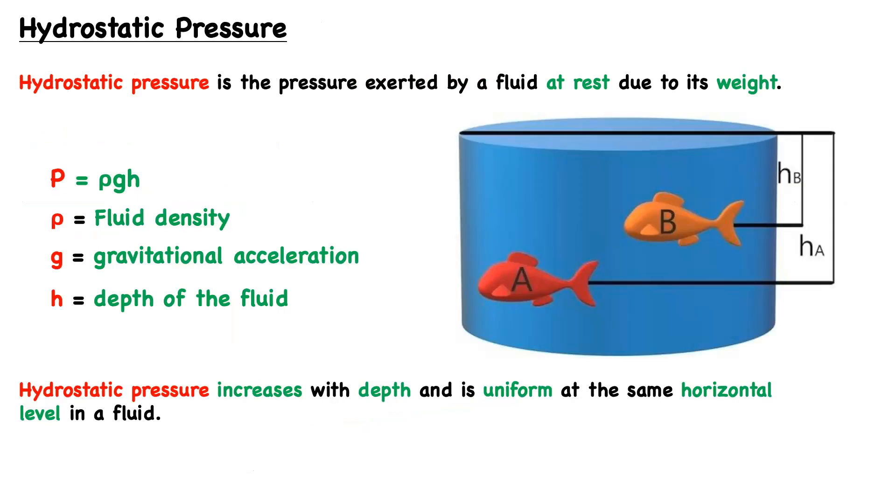Now let's talk about a specific type of pressure that is especially relevant to fluid systems: hydrostatic pressure. Hydrostatic pressure is the pressure exerted by a fluid at rest due to its weight. The formula for hydrostatic pressure can be seen here, where P, again representing pressure, equals the product of three terms: ρ (rho), which is the fluid density; g, which is the gravitational constant representing gravitational acceleration; and lastly, h, which is the depth or often called the height of the fluid.